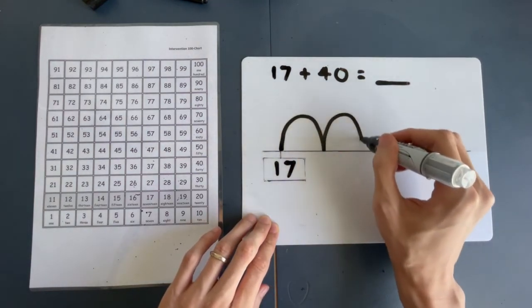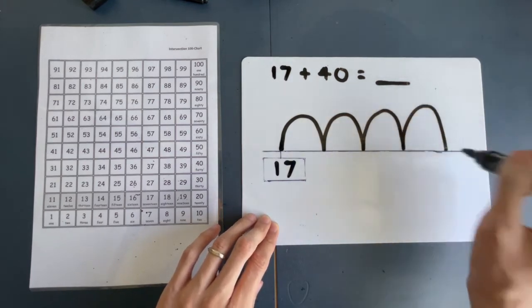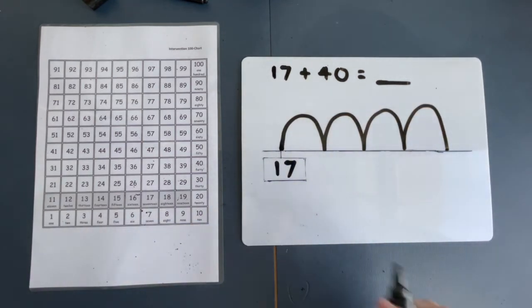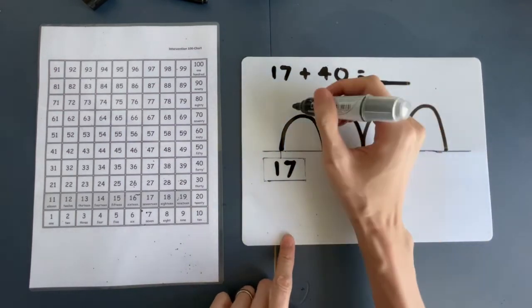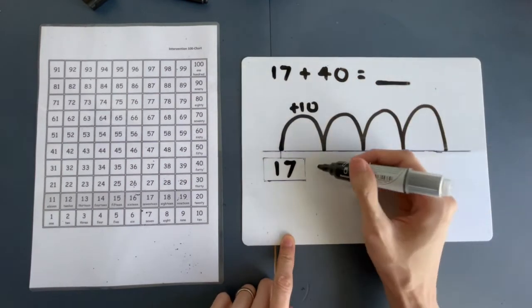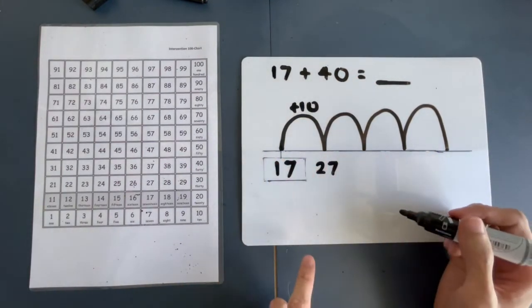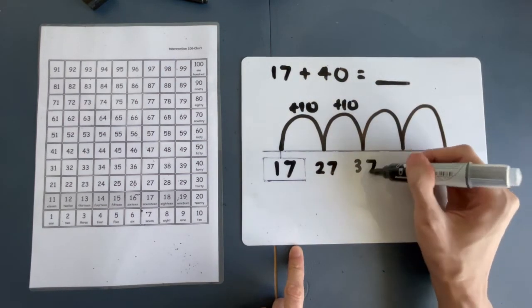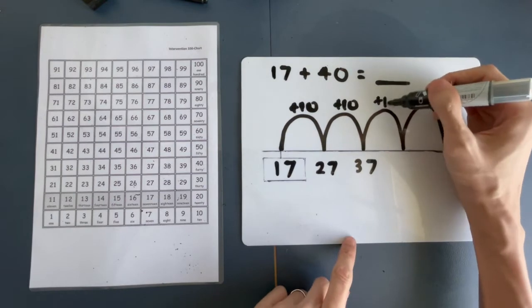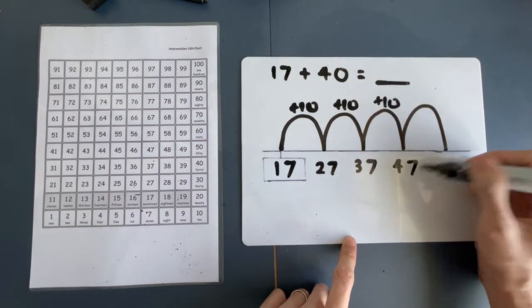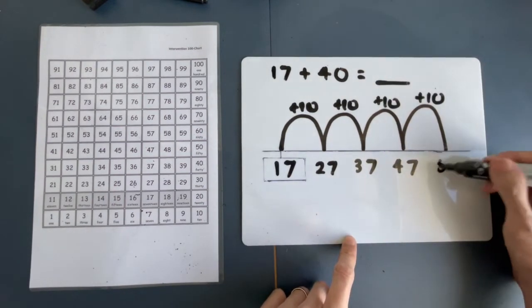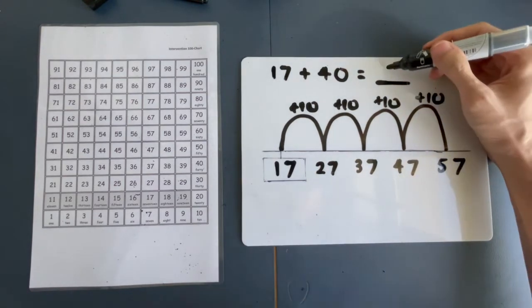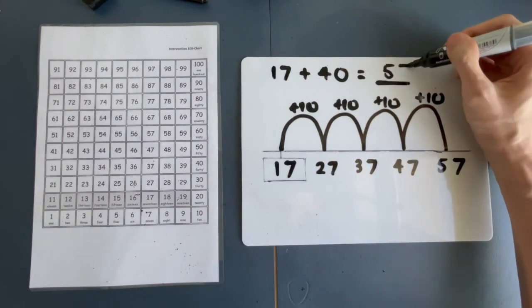1, 2, 3, 4. All right. We have done it. So, let's write in the numbers. So, 17, 10 more. So, what is 10 more? 27, right? Only the tens place changes. So, what's 10 more? 37. 10 more? 47. And what is 10 more? 57. So, the answer is 57.